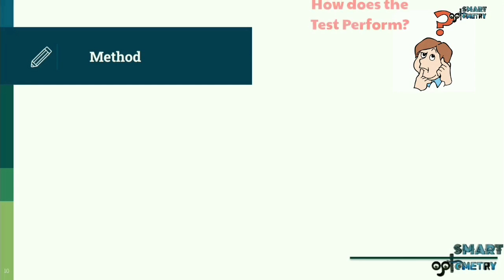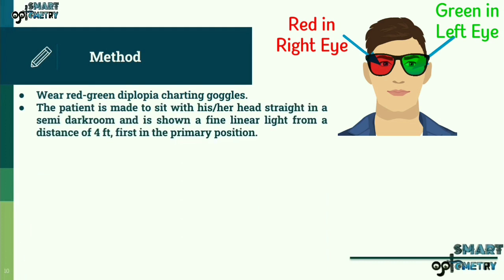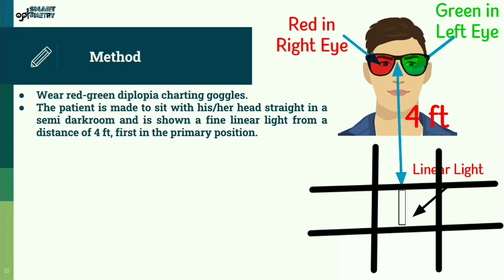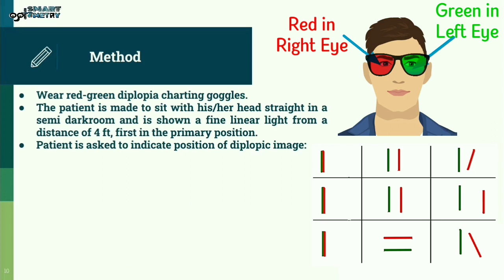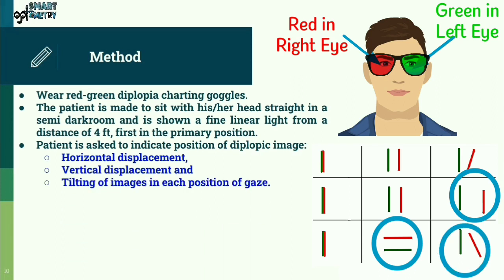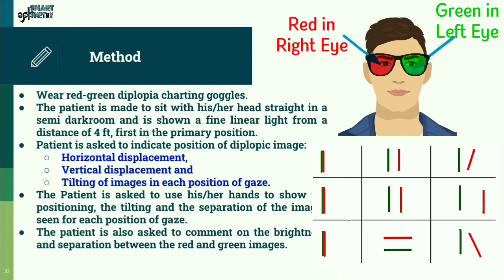How is the diplopia chart test performed? The patient is asked to wear red-green diplopia charting goggles — normally a red glass in front of the right eye and green in front of the left eye. The patient sits with their head straight in a semi-dark room and is shown a fine linear light from a distance of four feet, first in the primary position. The light is then moved into all other eight directions of gaze. The patient is asked to indicate the position of the diplopic image — including horizontal displacement, vertical displacement, and tilting of images — in each position of gaze, using their hands to show positioning, tilting, and separation. The patient is also asked to comment on the brightness and separation between the red and green images.